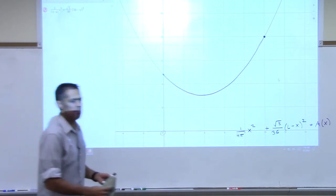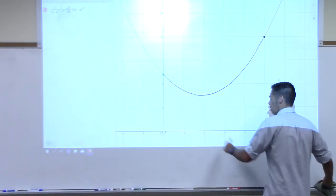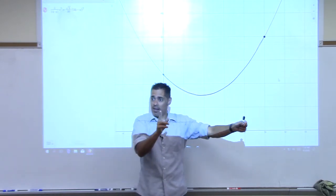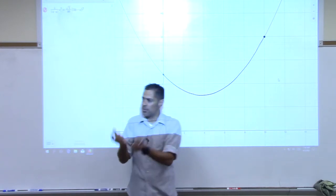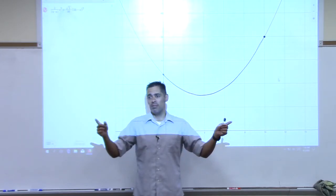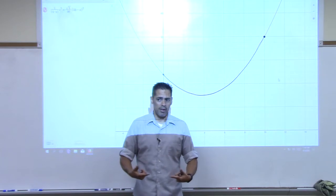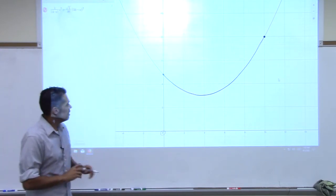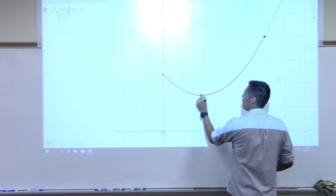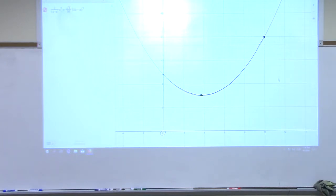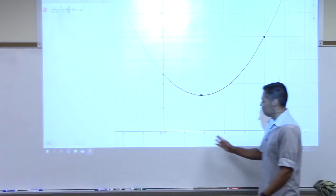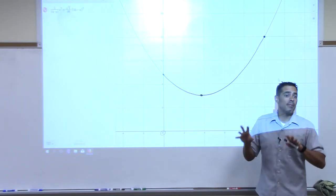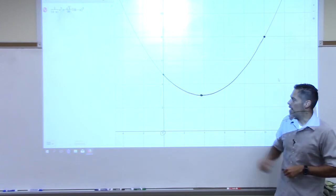At X equals 10, we get the most area. What does that mean? If you take a wire and cut it to bend one piece into a circle and the other into a triangle, what gives the most area? Don't make a triangle — just use the whole wire for a circle, and you'll get the most area. Now, if you wanted the minimum amount of area, according to this graph you'd cut somewhere around X equals three to four. Somewhere in there, bending into circle and triangle, gives the minimum area possible.